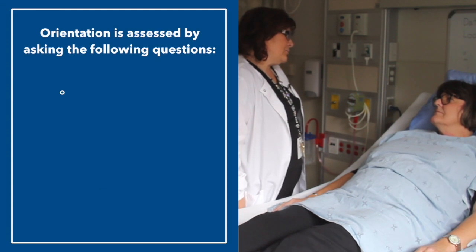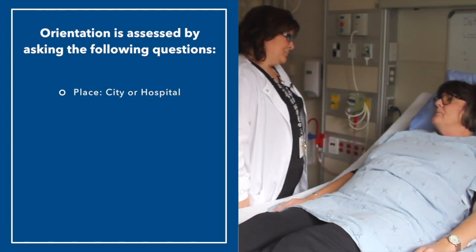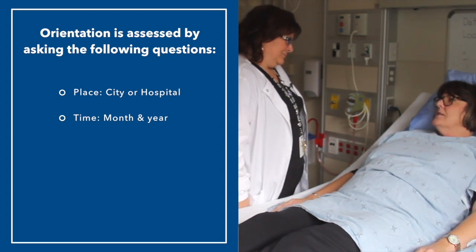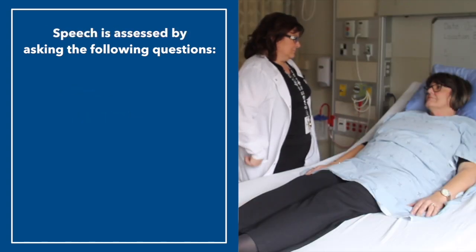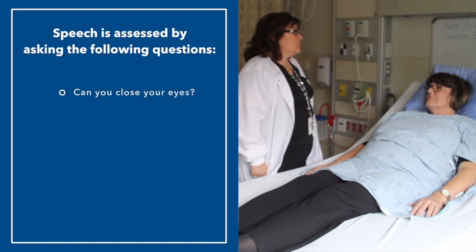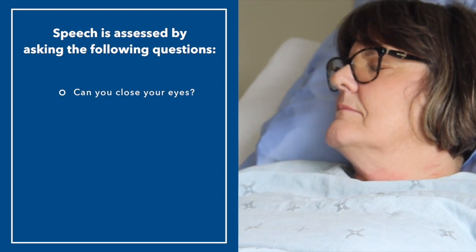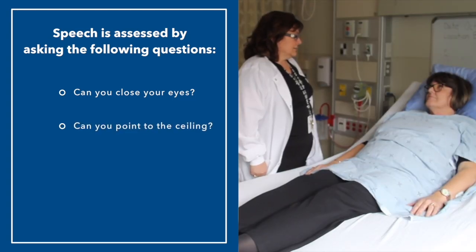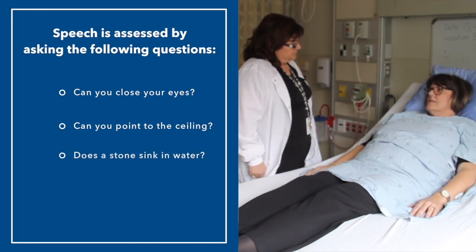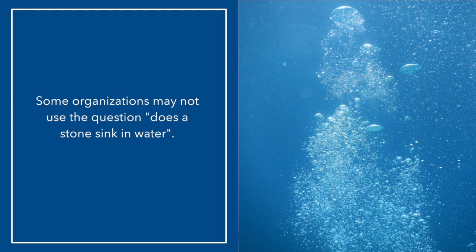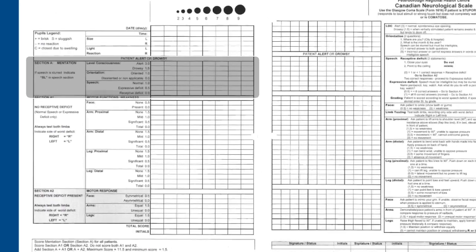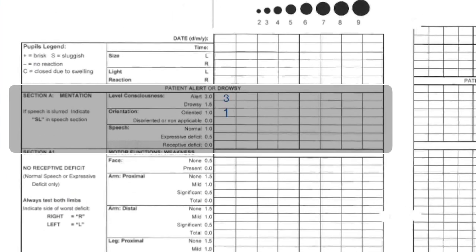The nurse asks: 'Hi Dorothy, can you tell me what city we're in?' The patient responds: 'Barry.' The nurse asks: 'Can you tell me the month and the year?' Patient responds: 'October 2018.' Receptive speech is then assessed. The nurse instructs without gesturing: 'Dorothy, can you close your eyes?... Can you point to the ceiling?... Does a stone sink in water?' The patient responds 'Yes.' Please note that some organizations may not use the question 'Does a stone sink in water?' The patient responded appropriately, therefore the patient does not have a receptive deficit.